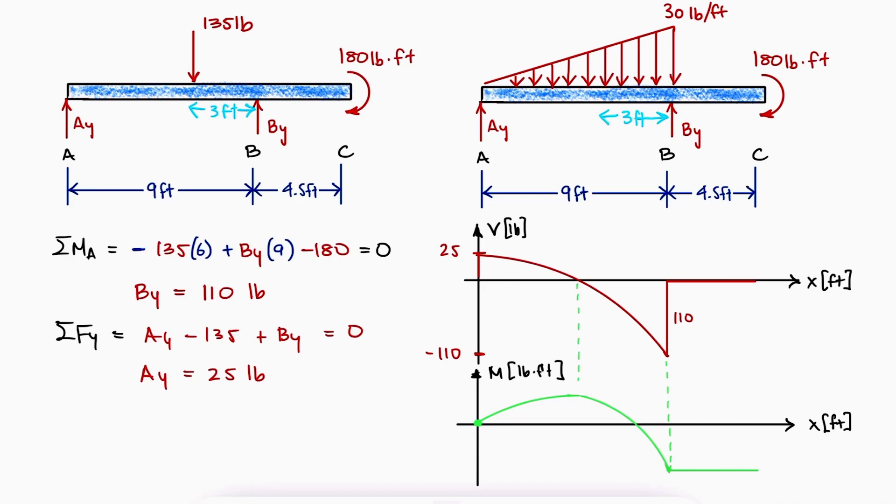Since at C we find a negative clockwise external couple of 180 pound feet, we know that in our bending moment diagram where we plot the reactions, we'll see a positive counterclockwise 180 couple going up, which means that the minimum value for the moment is minus 180.